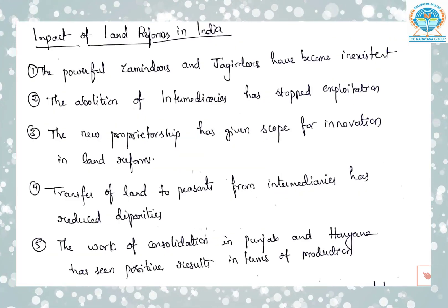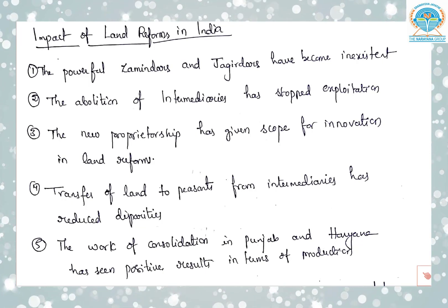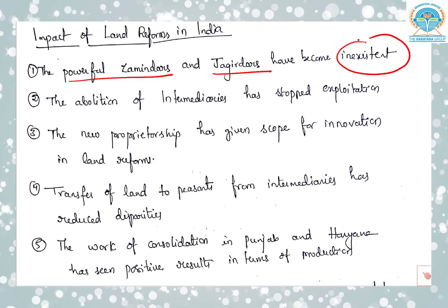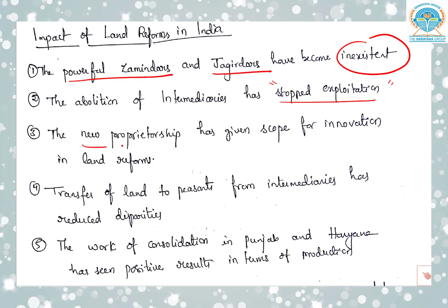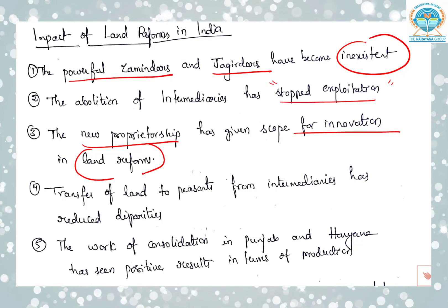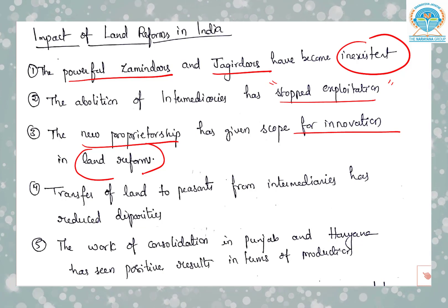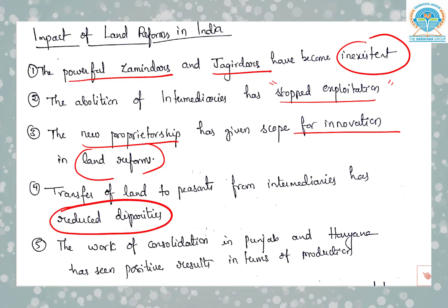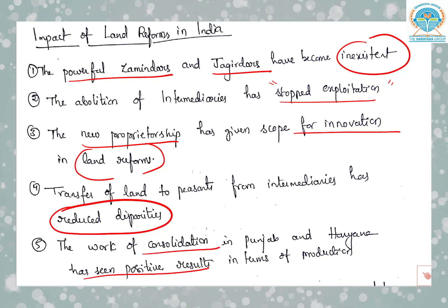What is the positive impact of land reforms in India? The powerful zamindars and jagirdars have become inexistent, as one aim of land reform was abolition of the zamindari system. The abolition of intermediaries has stopped exploitation. New proprietorship has given scope for innovation since the concept of land to the tiller has come, giving farmers enthusiasm to innovate on their own lands. Transfer of land to peasants from intermediaries has reduced disparities to some extent. The work of consolidation in Punjab and Haryana has seen positive results in terms of production.